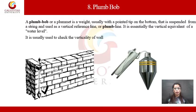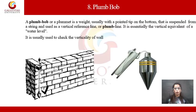The next masonry tool is the plumb bob. A plumb bob or plummet is a weight, usually with a pointed tip at the bottom. It is suspended from a string and used as a vertical reference line to check the verticality of a wall. It is essentially the vertical equivalent of a water level.